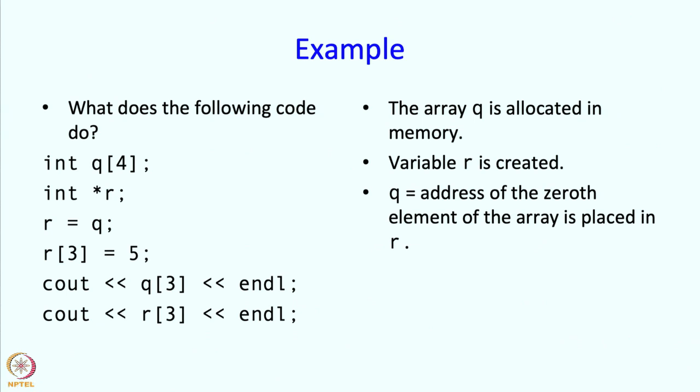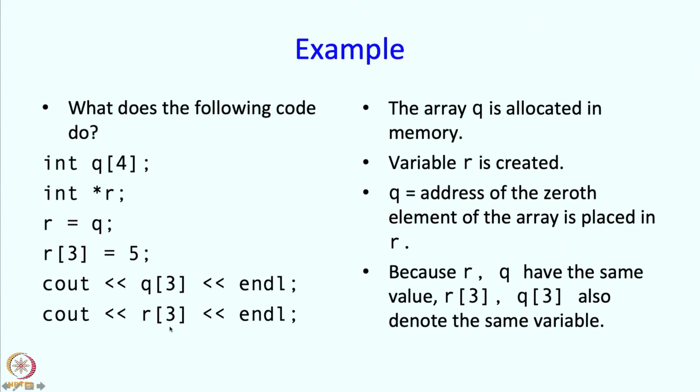Alright, so now what happens when you execute this? When you execute this, since r has the same value as q, this expression is as good as q of 3, so 5 will get placed in q of 3. So when you do this printing, 5 will get printed. And if you print r of 3, this is also going to refer to q of 3 and so again 5 will get printed. So r and q have the same value and r of 3 and q of 3 denote the same variable, and therefore this will end up printing 5 in both cases.